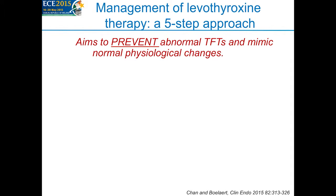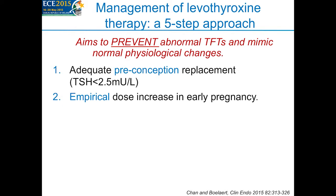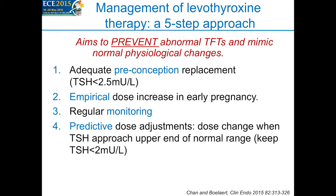The first step is that we aim for adequate preconception replacement, keeping the serum TSH below 2.5 before conception. We recommend empirical dose increases in early pregnancy, regular four-weekly monitoring at least during the first 20 weeks, and we use a predictive approach — changing the dose when serum TSH approaches the upper end of the normal pregnancy-specific range. Our aim is to keep serum TSH below 2.